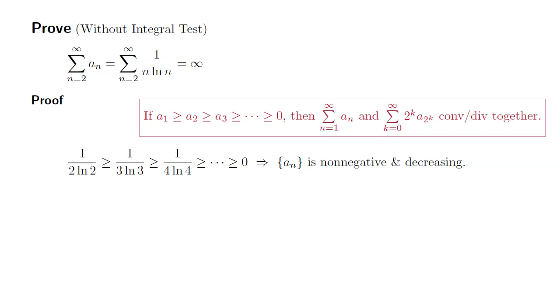So instead of tackling the original series, I'm going to tackle the summation k goes from 1 to infinity, 2^k times a sub 2^k. So basically, we're going to replace n by 2^k and then multiply by 2^k, which gives us this. So you can see that the 2^k is on top and bottom, so we can cancel those out.